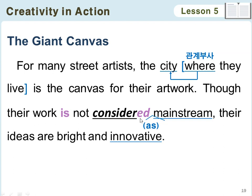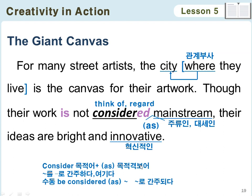그 다음 문장에서는 'consider'라는 동사가 나오는데요. 이 'consider'는 'consider A as B'의 형태로 굉장히 많이 씁니다. A 자리에는 목적어가 들어가고 B 자리에는 목적격 보어가 들어가서 'A를 B로 여기다, 간주하다'라는 뜻인데, 비슷한 의미를 가진 'regard'나 'think of'를 써주는 경우도 있습니다. 전치사 'as'가 생략되는 경우도 많은데, 지금 우리 책에서도 'consider'과 주류라는 뜻을 가진 'mainstream' 사이에 'as'가 생략되어 있죠. 비록 그들의 작품이 주류로 여겨지진 않을지라도 그들의 아이디어는 bright, 빛나고 innovative, 혁신적이랍니다.